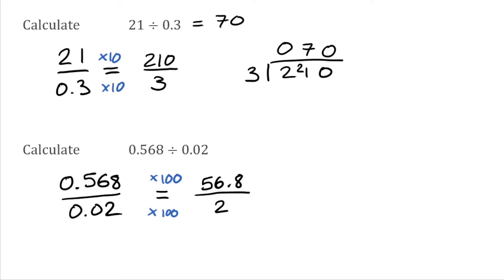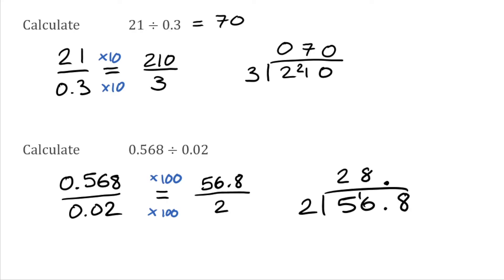So we're now simply going to do 56.8 — I'll put the point up here ready — divided by 2. 2s into 5 go twice because that's 4 with a remainder of 1. 2s into 16 go exactly 8 times. And finally 2s into 8 go 4 times. So our answer to this question is 28.4. That's a nice simple trick we can use when we're dividing by decimals.